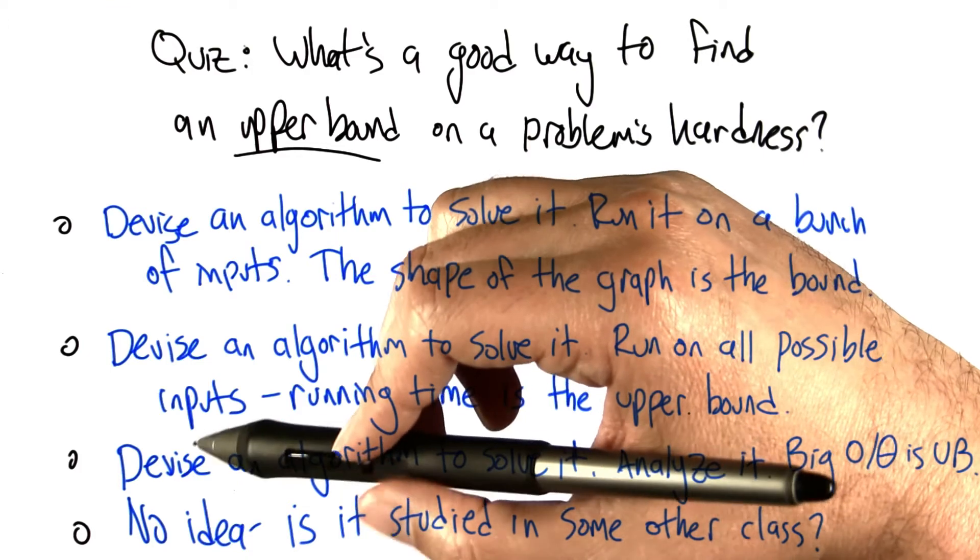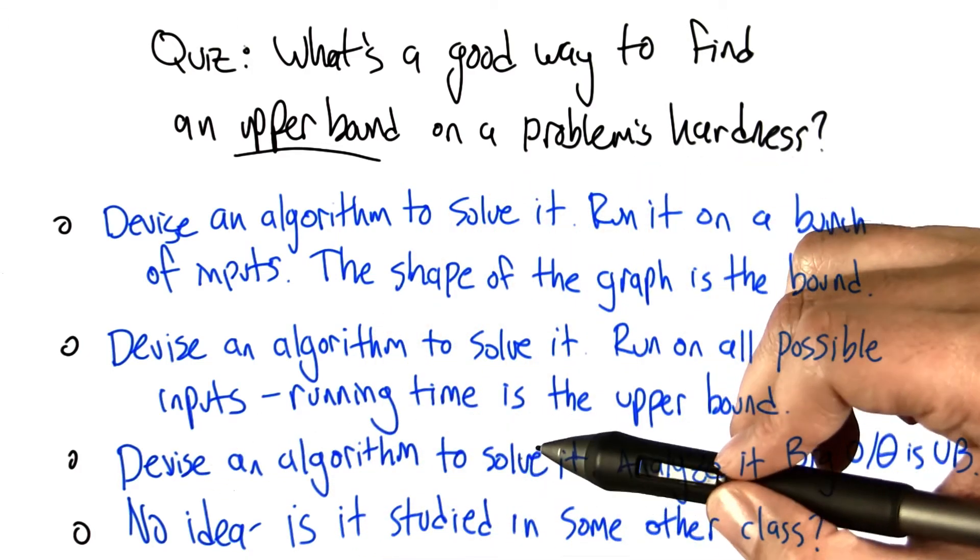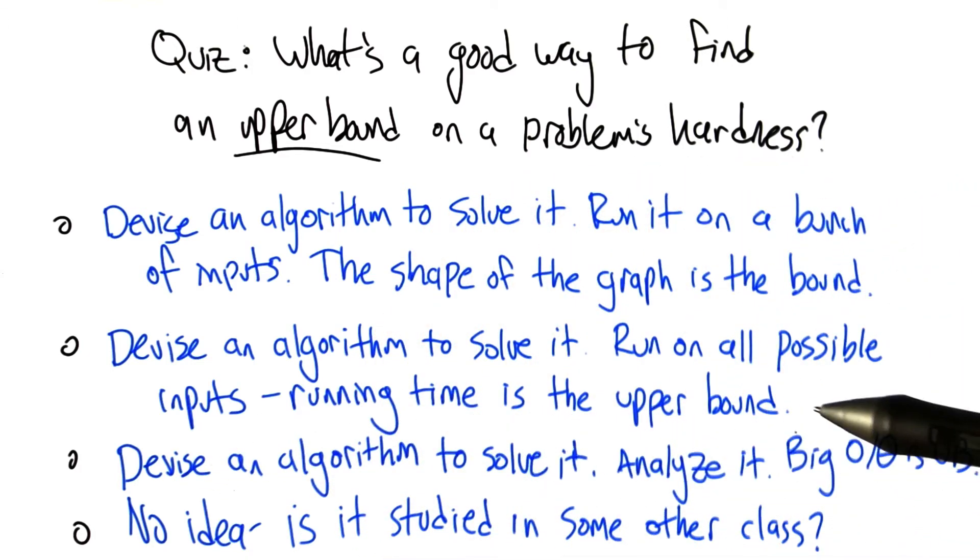Third, you can imagine devising an algorithm to solve the problem and then analyzing it, and whatever the big O or big theta is that you get from that analysis is an upper bound on the hardness of the problem.